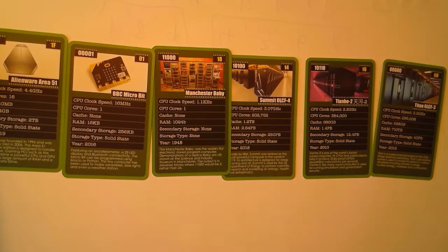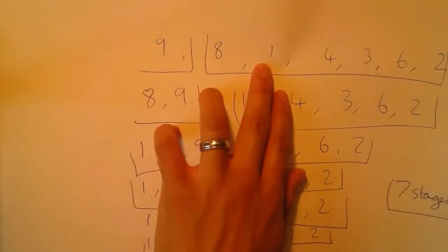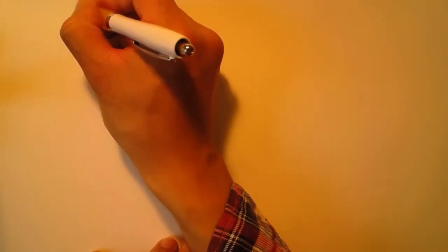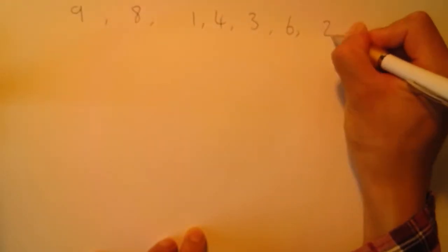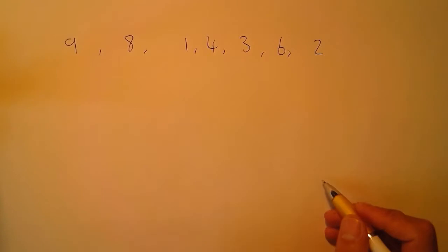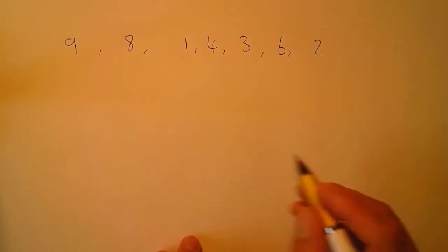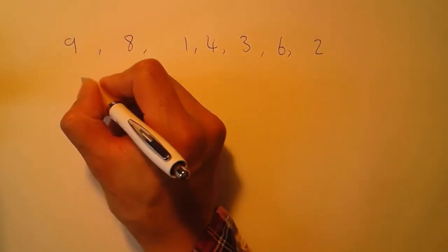That was a bit less efficient — the cards could only ever move one place per comparison. Let's look at that now on paper. We'll take the same set of numbers so we can make a comparison: 9, 8, 1, 4, 3, 6, 2. Let's do a bubble sort on this. Nine and eight are compared and they swap.